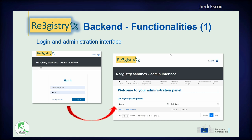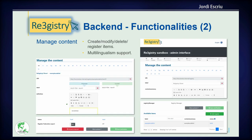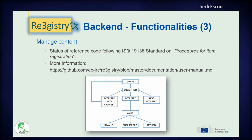The back end is the administrative component of the registry. You need to log in, and according to the role you have — because there are different roles — you will see one dashboard or another. The main purpose of the registry is to manage content, so it allows you to create, modify, and delete items. It keeps versioning of the items that you are updating or deleting, most of which remain accessible, and it is multilingual. The registry has also implemented a workflow according to the ISO standard — a draft is submitted, which can be accepted or not; if accepted it becomes valid and can be published, or it can be accepted with changes and go back to draft, or the proposal can be rejected.